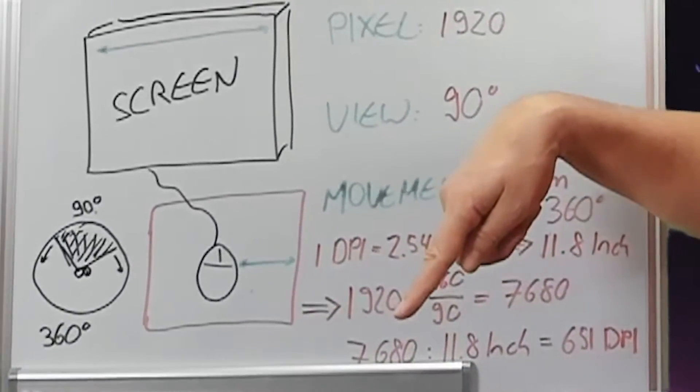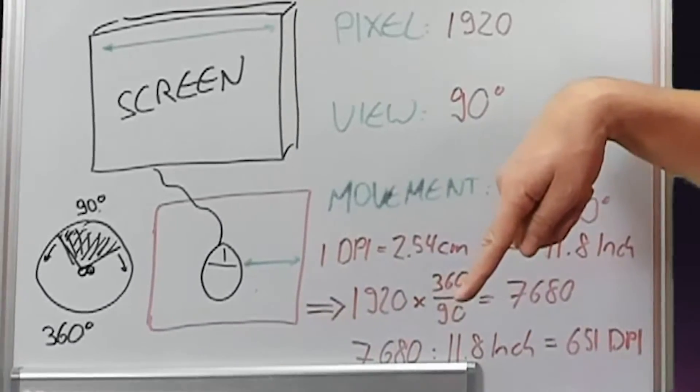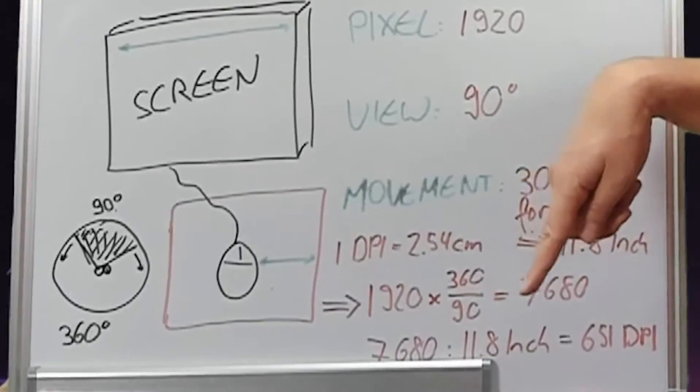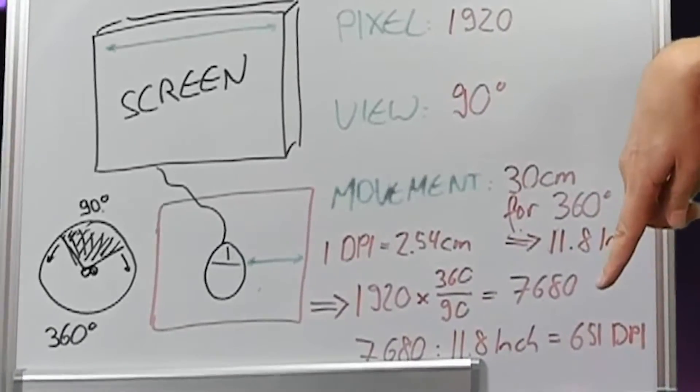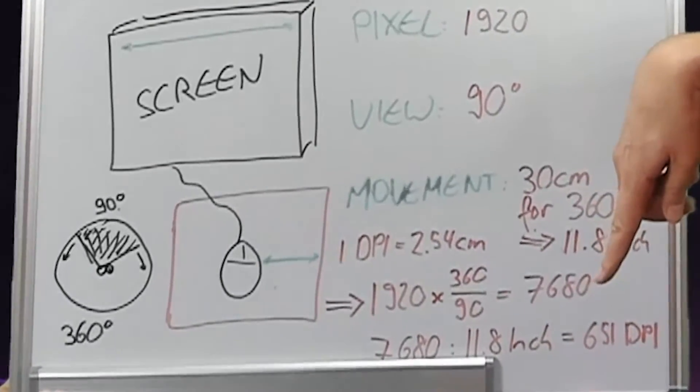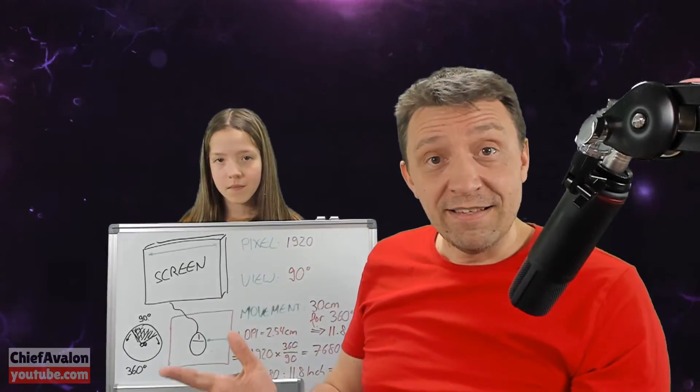So what you do is you divide the 7680 pixels by 11.8 inches, and that gives you your mouse sensitivity of 651 DPI. And that is the result.